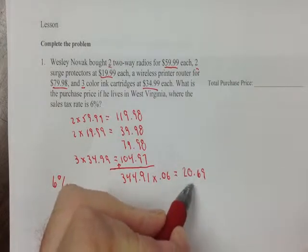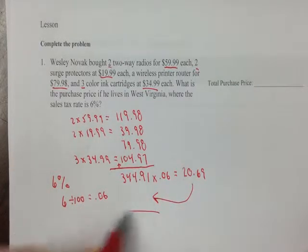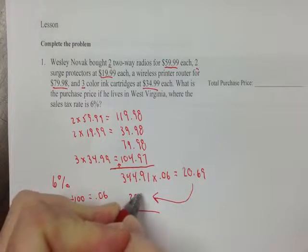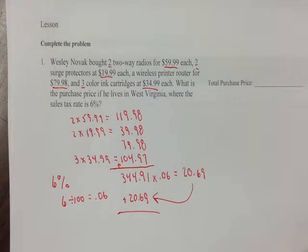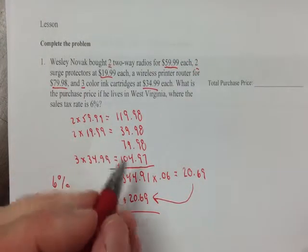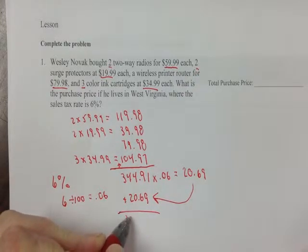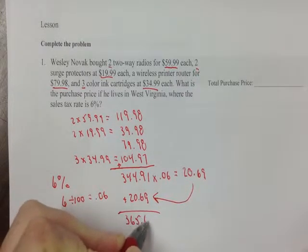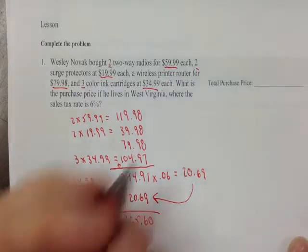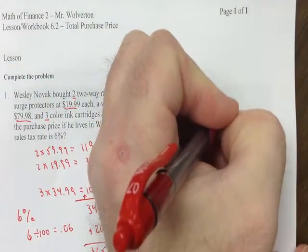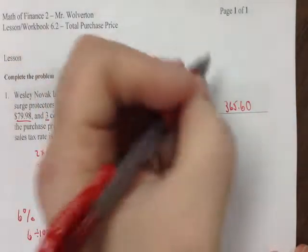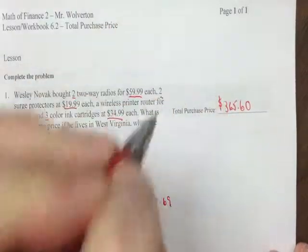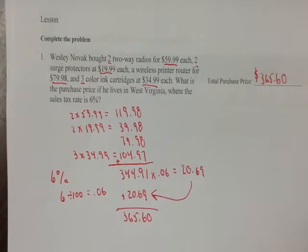You're going to take the sales tax and add it back to your purchase, and we get $365.60. So your total purchase price is $365.60. If you want to put a dollar sign, it goes at the front.